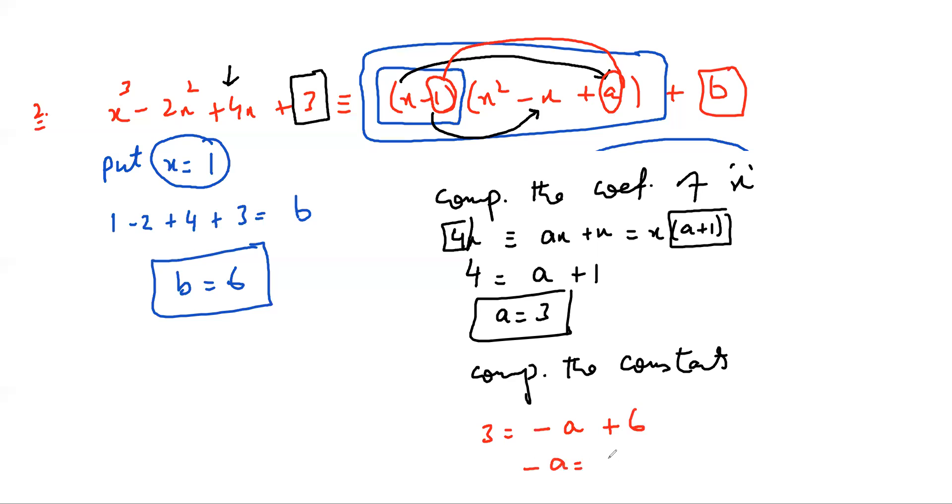So this minus A is going to be 3 minus 6. So minus A is equal to minus 3. And you have A equal to 3. That is the same value. So that is how you can solve, you can find the unknowns from the identities. Can you try the third question?